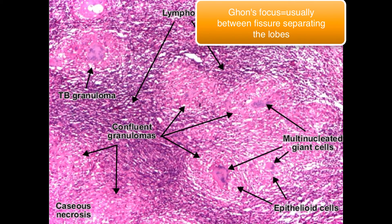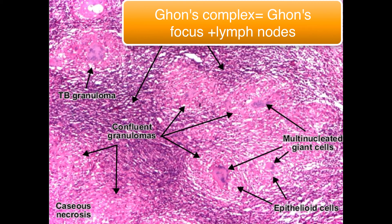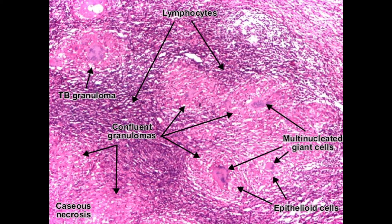The location of the granuloma can vary and different terminologies are used depending on where it is relative to the lungs. A Ghon focus is when the granuloma is in the interlobar fissure — essentially in the upper part of a lower lobe and vice versa. If it reaches lymph nodes near the lungs, such as mediastinal or bronchomediastinal nodes, it is called a Ghon complex. If tuberculosis is cleared the first time but re-exposure occurs, the granuloma typically appears at the apex of one or both lungs, mainly due to higher oxygen levels there.